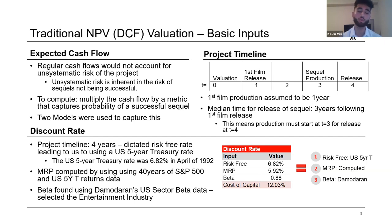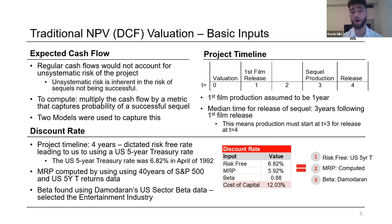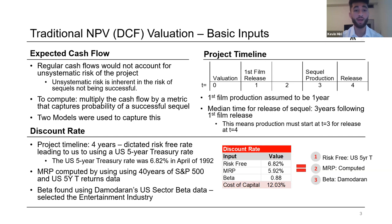For our project timeline, we used four years, because the median sequel release time was three years after the first film's release, meaning sequel production at t=3 equals year four. We used the US five-year treasury rate as a risk-free rate to match the project's horizon. For our market risk premium, we used 40 years of S&P 500 historical returns minus the US treasury rate returns, giving us a market risk premium of 5.92%. Our beta was drawn from Damodaran's US sector data, primarily from the entertainment industry, which encapsulates the systematic risks of the film industry.